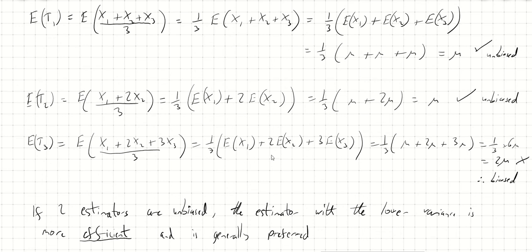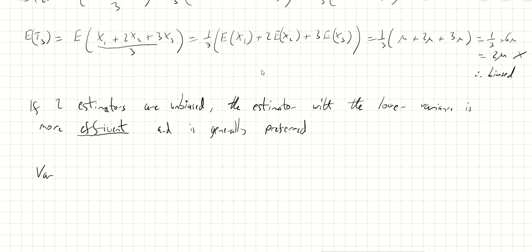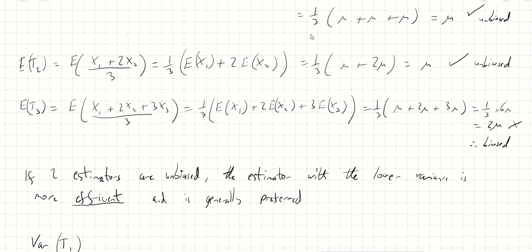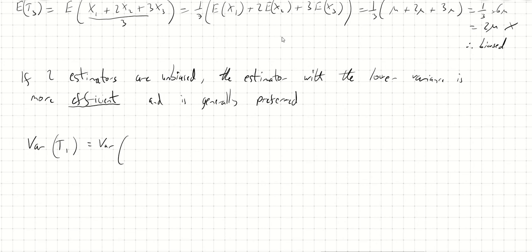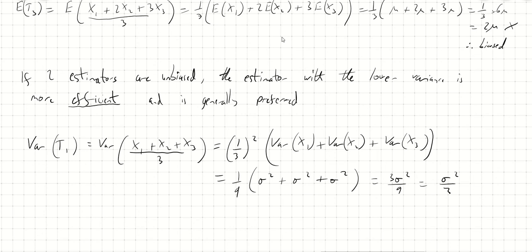We're only going to look at T1 and T2 because T3 was biased. So the variance of T1 — remember, T1 was x1 plus x2 plus x3 divided by 3. Using our linear combinations, when we have the variance of a linear combination, we pull out the third squared. This gives us one ninth times (sigma squared plus sigma squared plus sigma squared), which is 3 sigma squared over 9, which is sigma squared over 3.